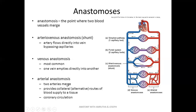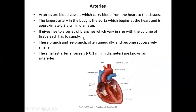The importance of arterial anastomosis is that it provides collateral circulation to a tissue. This is seen in areas like the heart, where there are many anastomoses between the right and left coronary arteries. Arteries carry oxygenated blood from the heart to the tissues. The largest artery is the aorta, with a diameter of 2.5 cm. Arteries divide into smaller branches, reaching the tissue level and forming capillaries. The smallest arterial vessel is the arteriole, which is less than 0.1 mm in diameter.